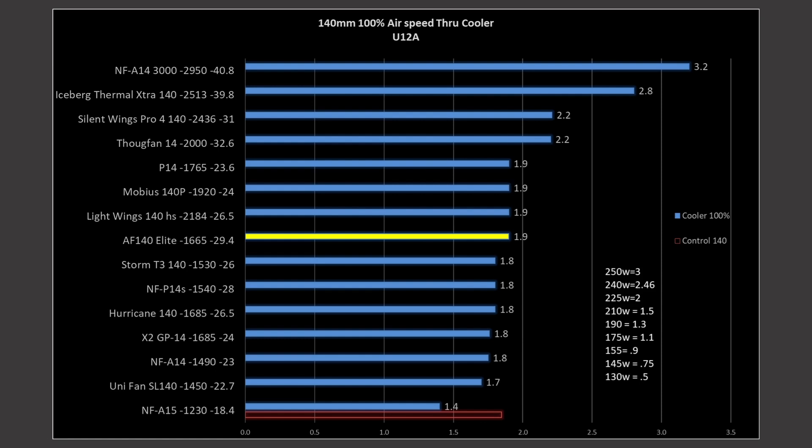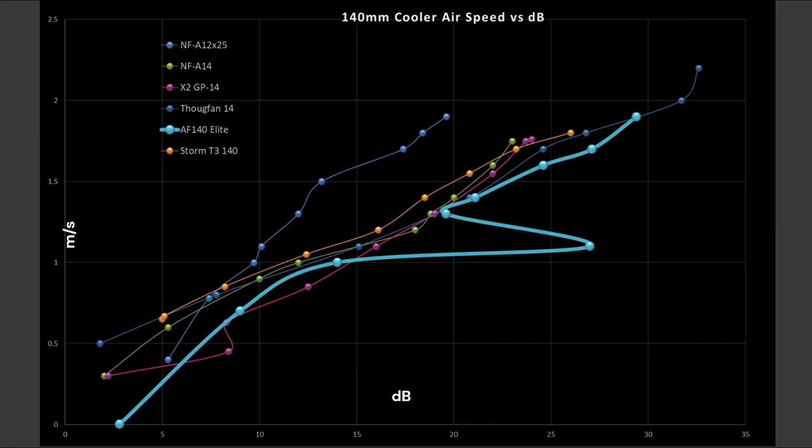And next up, we have the airspeed going through the cooler versus decibels, just to directly compare. And, right here is the AF140 Elite. It's bottom of the pack, bottom of the pack, near the bottom. Looks like it was going to be okay. We hit harmonic frequency, comes back, and stays at the bottom of the pack.